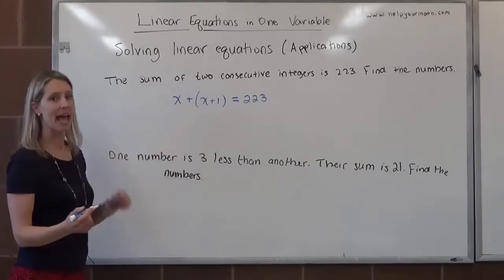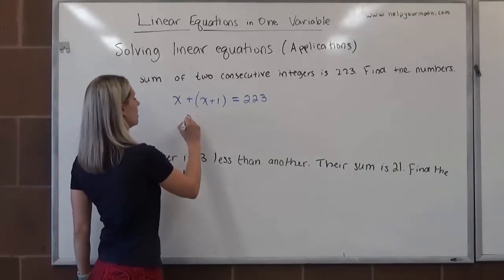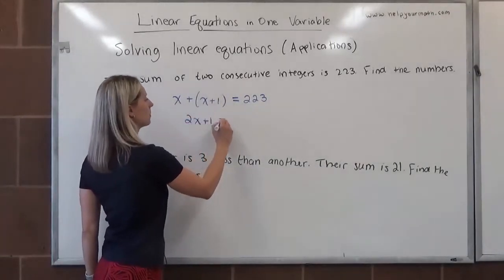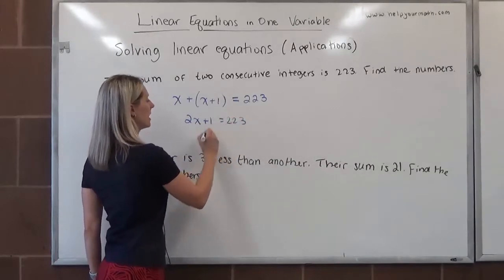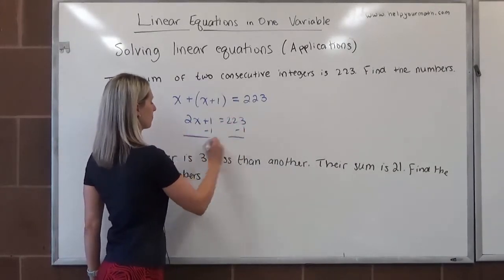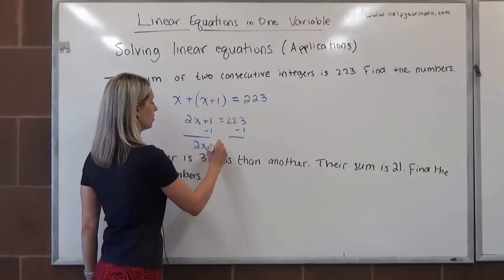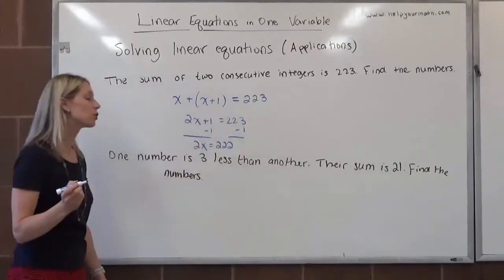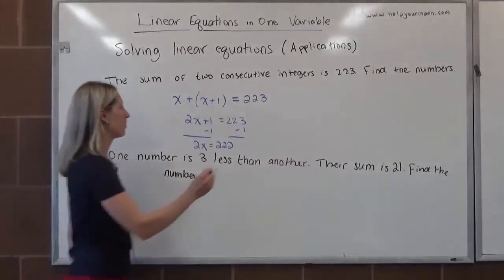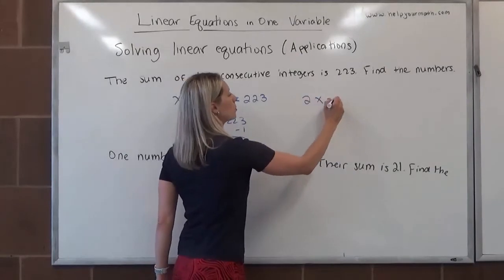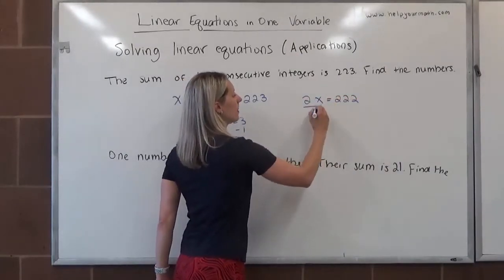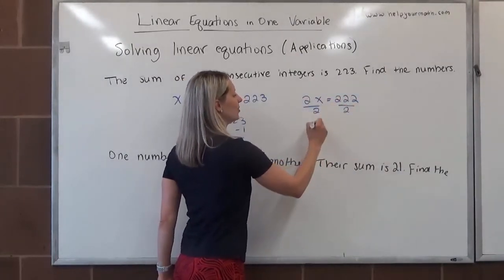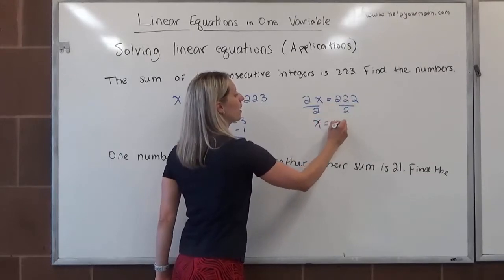We're going to combine like terms. x plus x is 2x, so we get 2x plus 1 equals 223. Take away 1 from both sides, and we get 2x equals 222. To get x totally by itself, we will divide both sides by 2. So 2x divided by 2 leaves me with x, and 222 divided by 2 is 111.